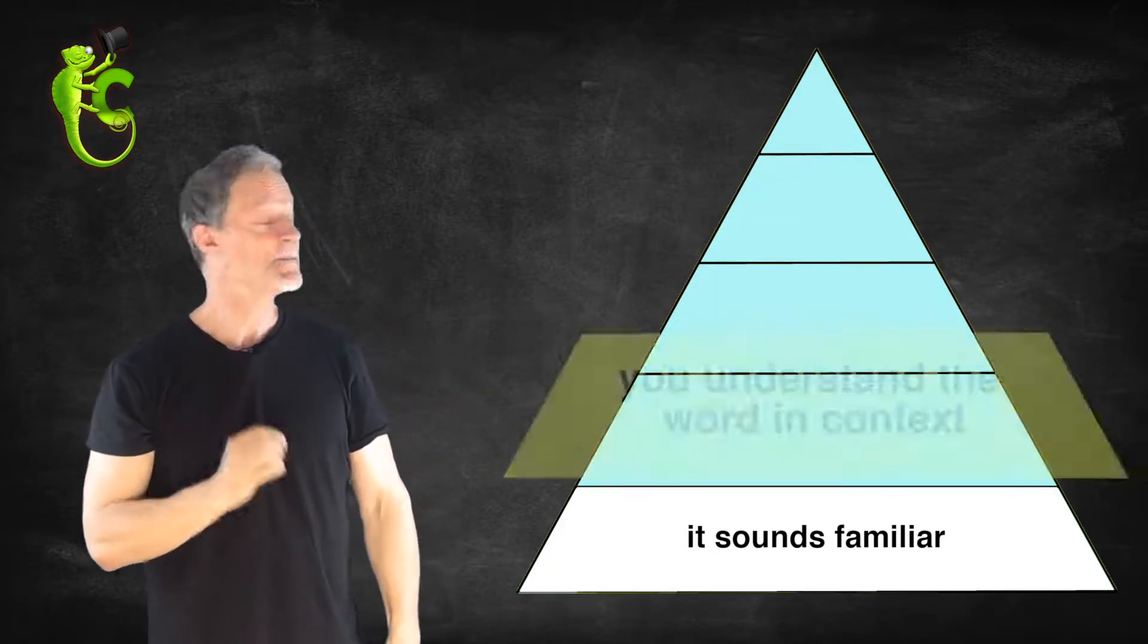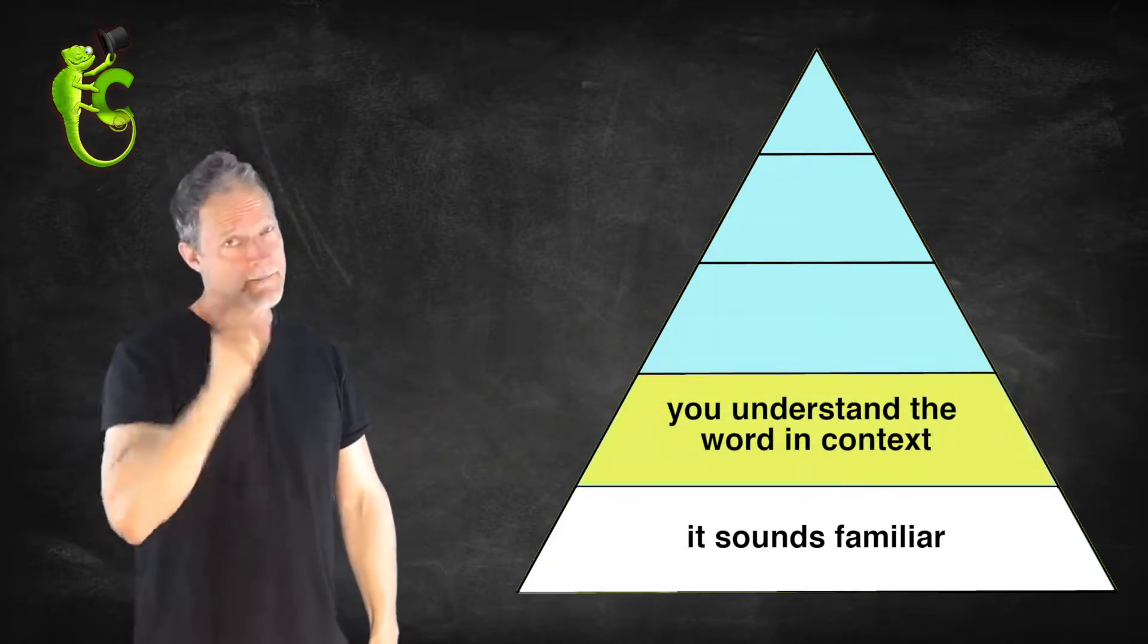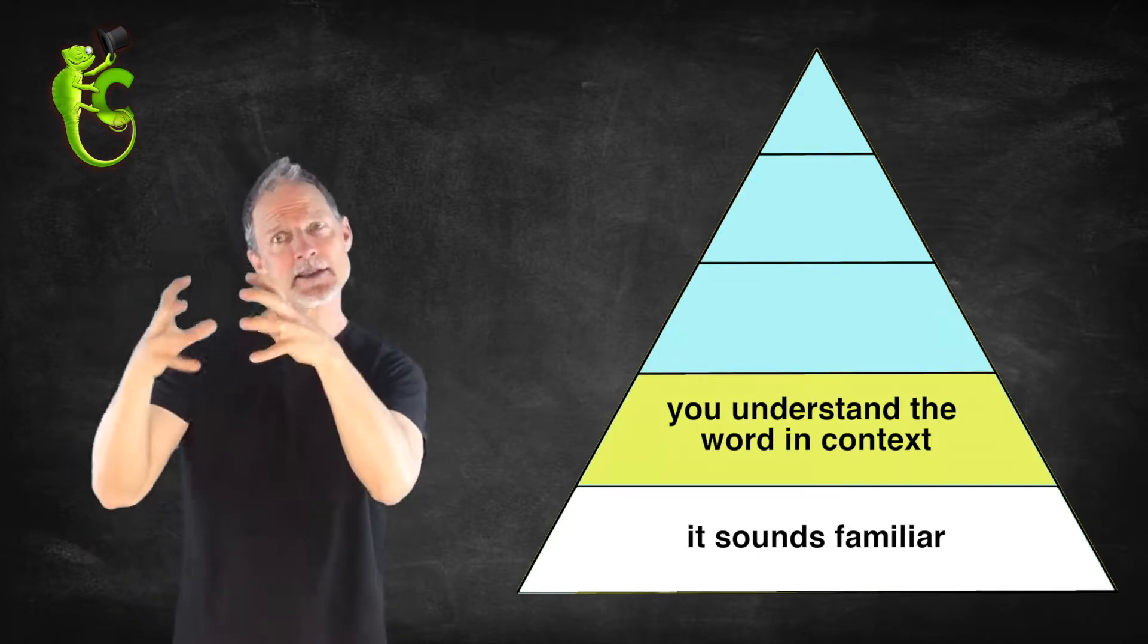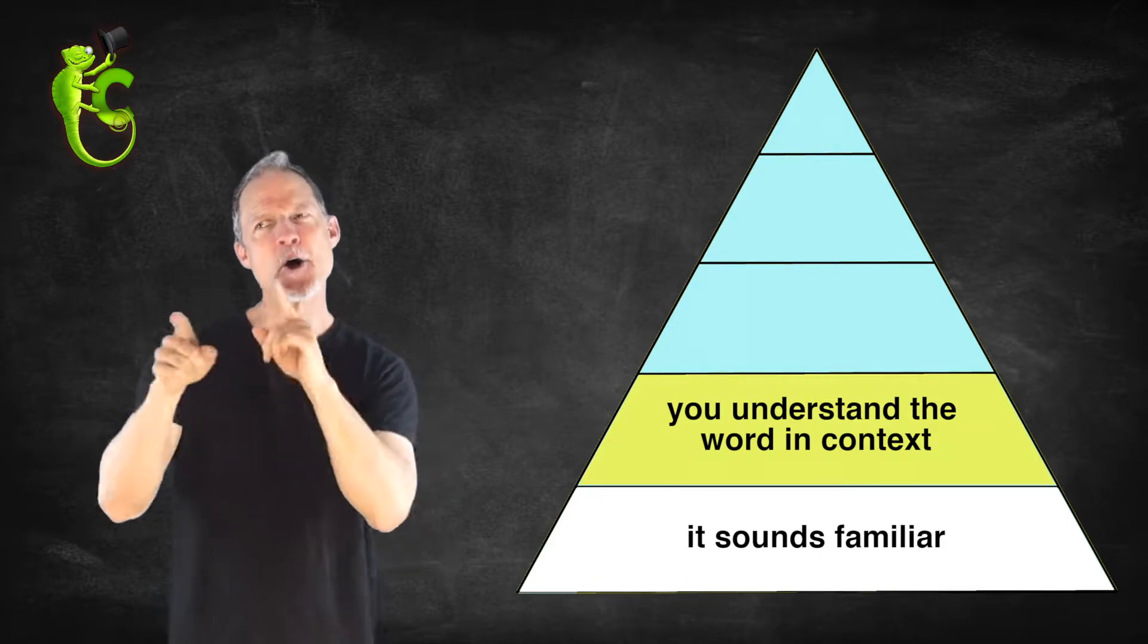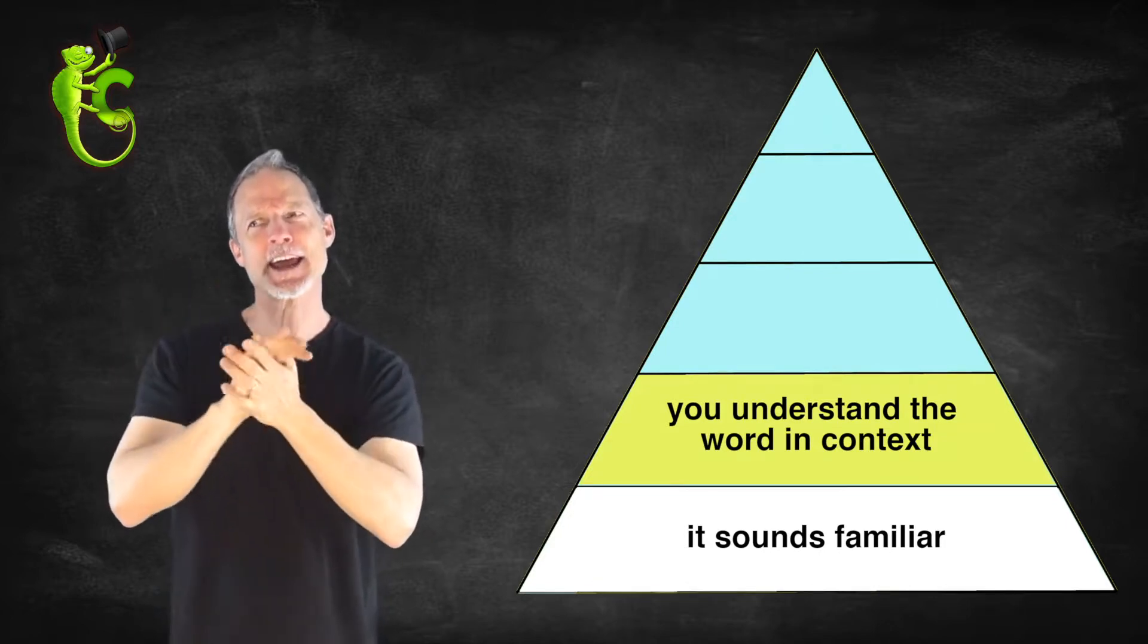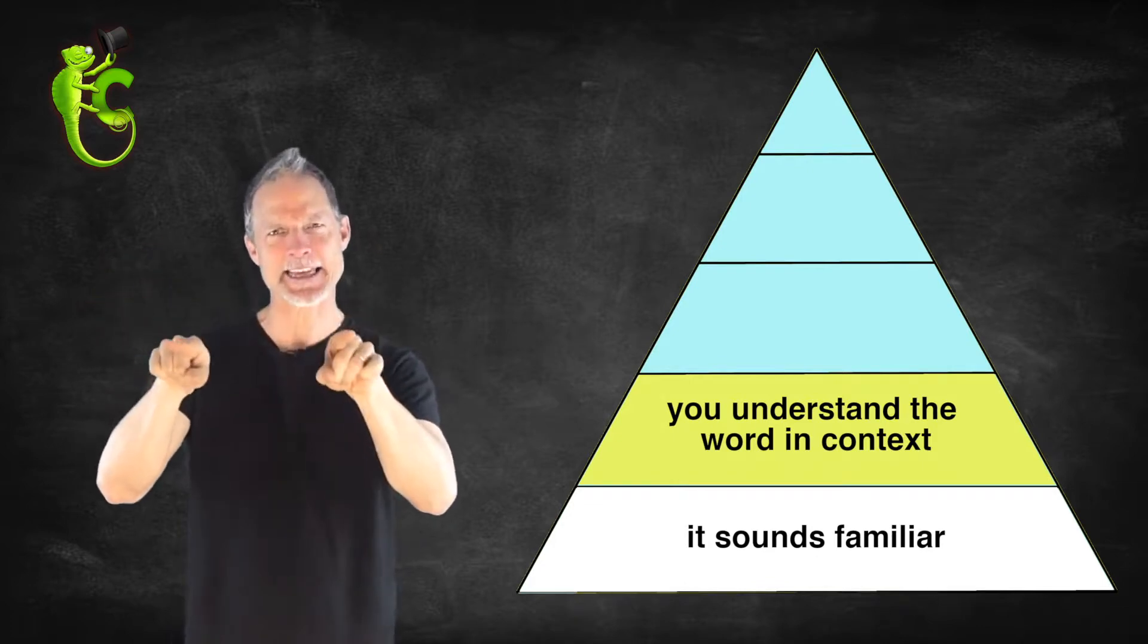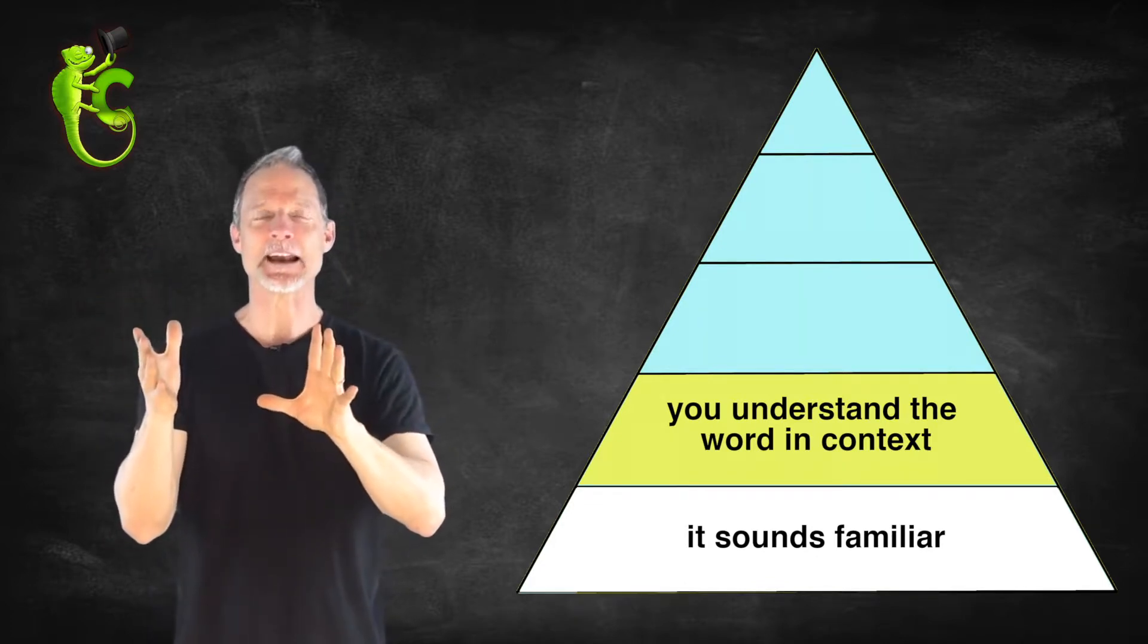Now, the next level is: you understand the word in context. Yeah, when someone uses the word in the structure of the sentence, oh yeah, I understand what ambiguous means. Yeah, when you use it like that. Yeah, okay, I understand it.